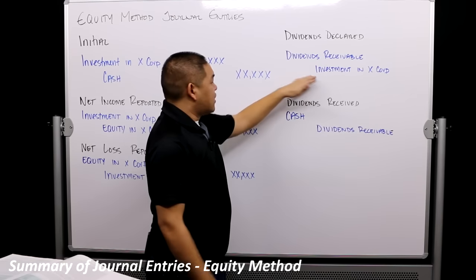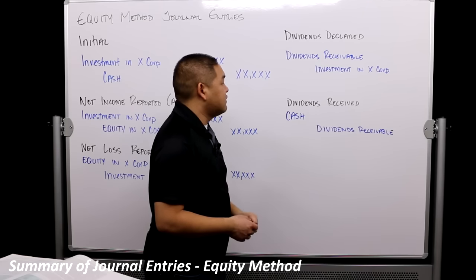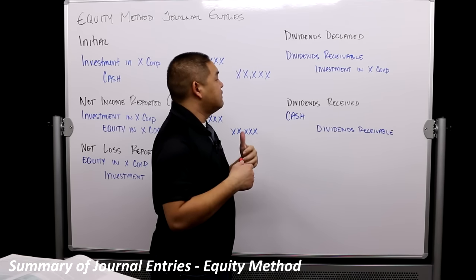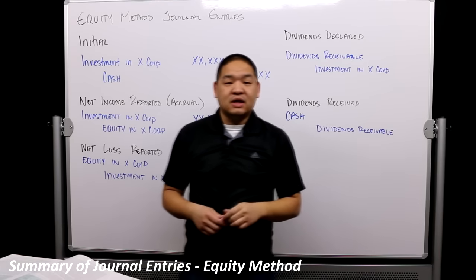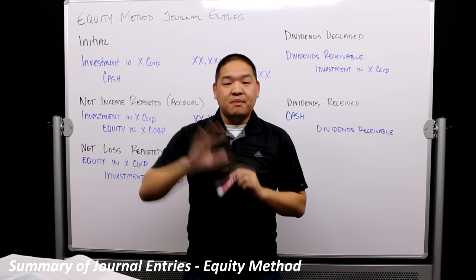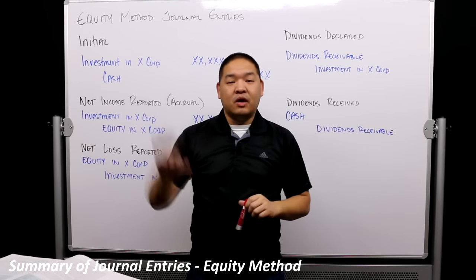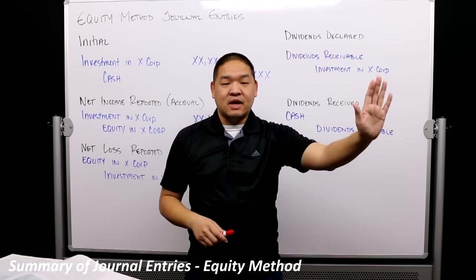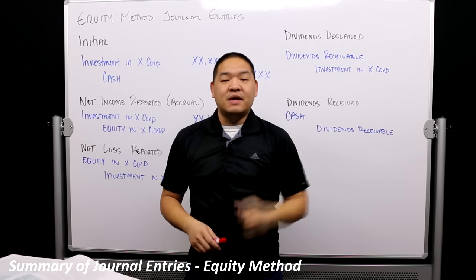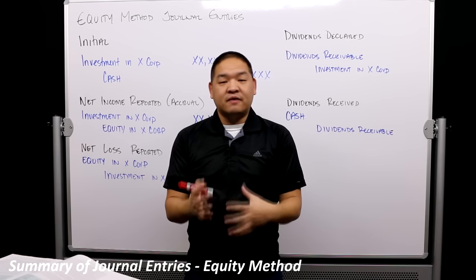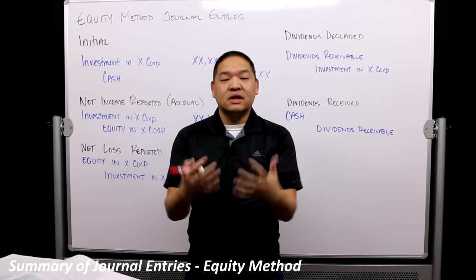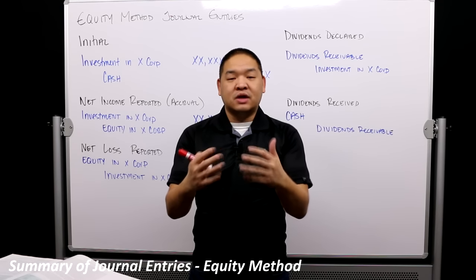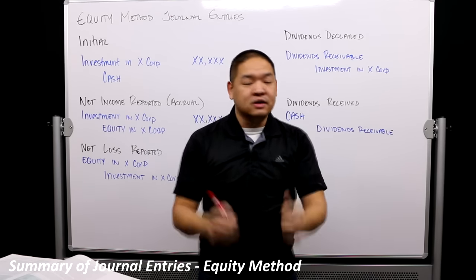We debit Dividends Receivable because dividends can be declared in one period and paid in another. The Board of Directors declares the dividends and sets a payment date, so it may take some time for the paperwork before the dividends are released to the investor. That's why we book it right away — once they're declared, they're technically ours.